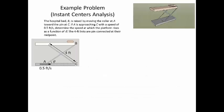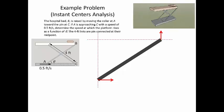Let's apply instant centers analysis to the hospital bed example problem we solved using absolute and relative motion analysis. The roller at A is moving toward the pin at C. If A is approaching C at 0.5 feet per second, we want to determine the speed at which the platform rises as a function of theta. The links are 4 feet long and pin-connected at the midpoint. Our first step is to draw velocities on member AB: at A, the velocity is horizontal at 0.5 feet per second, and at B the velocity is vertical. We then draw perpendicular lines to each velocity and find their intersection — our instant center.